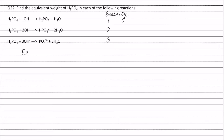Therefore, the equivalent weight of H3PO4 in the first reaction will be the molecular weight of H3PO4, that is 98, divided by the basicity of H3PO4, that is two, and this is equal to 49.